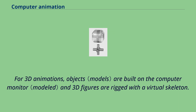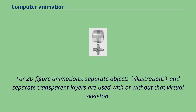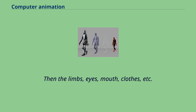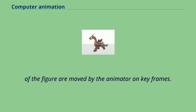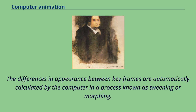For 3D animations, objects are built on the computer monitor and 3D figures are rigged with a virtual skeleton. For 2D figure animations, separate objects and separate transparent layers are used with or without that virtual skeleton. Then the limbs, eyes, mouth, clothes, etc. of the figure are moved by the animator on keyframes.